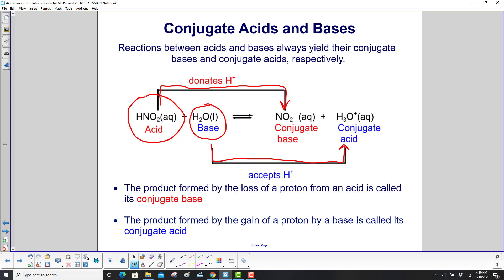The product formed by the loss of a proton from an acid is called its conjugate base. The product formed by the gain of a proton by a base is called its conjugate acid.